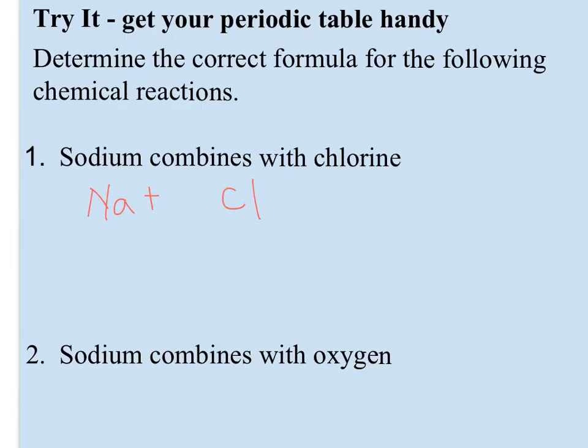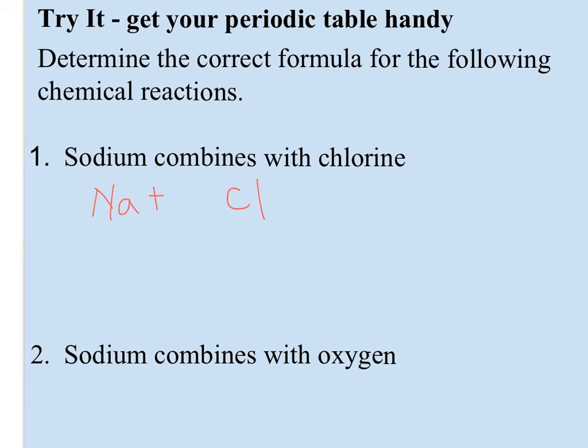So I'm going to work through this try it and show you a couple of ways I like to determine the ionic formula, the formula unit. So my first example says sodium combines with chlorine, so I've written down Na for sodium, and I put a plus sign by it because sodium's in group 1A and will tend to lose that one electron. Chlorine is Cl, and now when I look, I see chlorine's in family seven, so it's going to tend to gain that one electron.